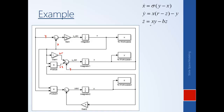For the last equation, Z-dot is X times Y minus B times Z. We branch off X and Y, multiply them together, then feed back Z through B. So X times Y minus B times Z is Z-dot — integrate it once to get Z.